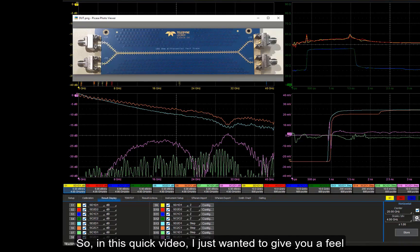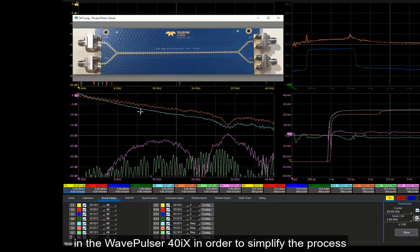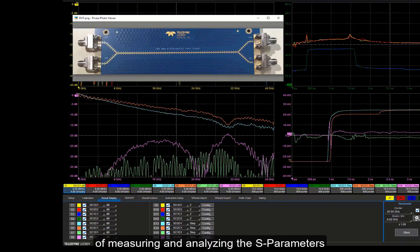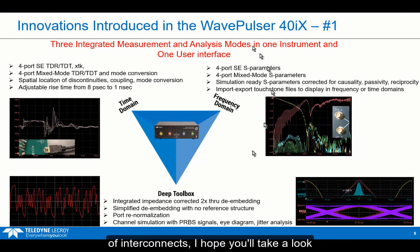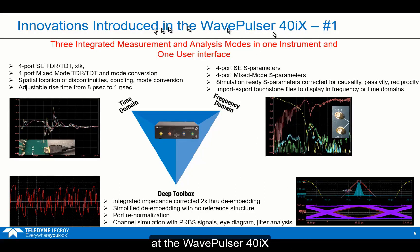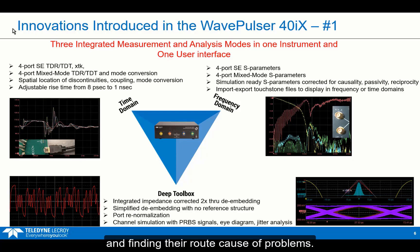So in this quick video, I just wanted to give you a feel for some of the features we can take advantage of in the WavePulsar 40IX to simplify the process of measuring and analyzing S-parameters as single-ended and mixed mode. If your applications involve high-speed characterization of interconnects, I hope you'll take a look at the WavePulsar 40IX — it dramatically simplifies the high-frequency measurements that are so important in characterizing interconnects and finding the root cause of problems.